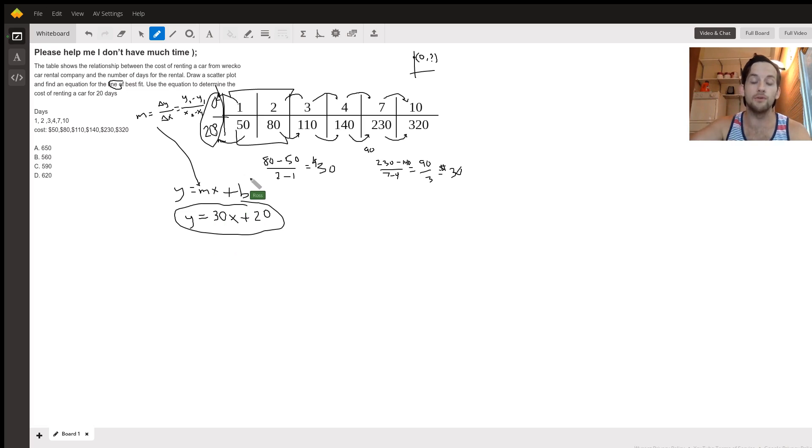And it will actually go through all of those points because the slope is constant. Now we want to use that to figure out what's the cost of renting for 20 days. Well, remember that the days, that's up here in our x row. So all we have to do is take our equation and plug in 20 for that x and see what we get for the y. So we have 30 times 20, which is 600 plus 20, and that's going to get 620, which is d.